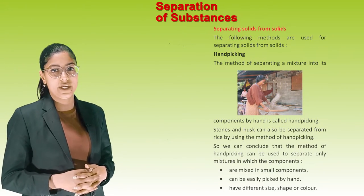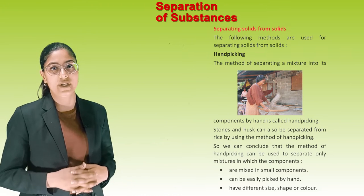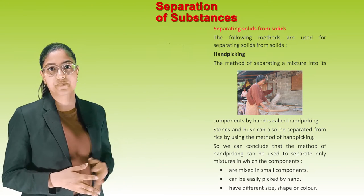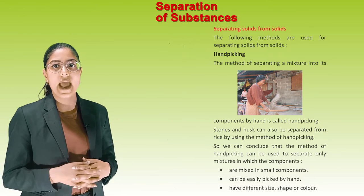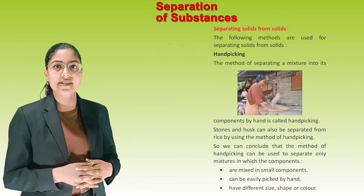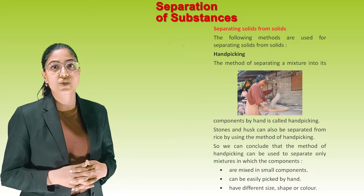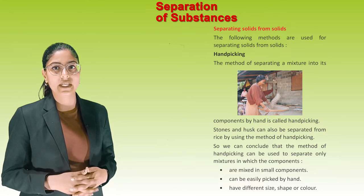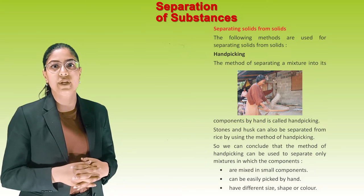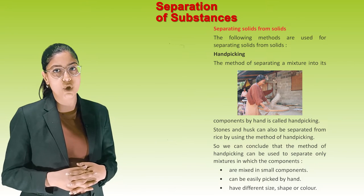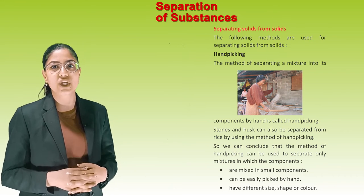Separating solids from solids — Hand Picking: The method of separating a mixture by hand is called hand picking. Stones and husks can be separated from rice using this method. Hand picking can be used only when the components are present in small amounts, can be easily picked by hand, and have different size, shape, or color.